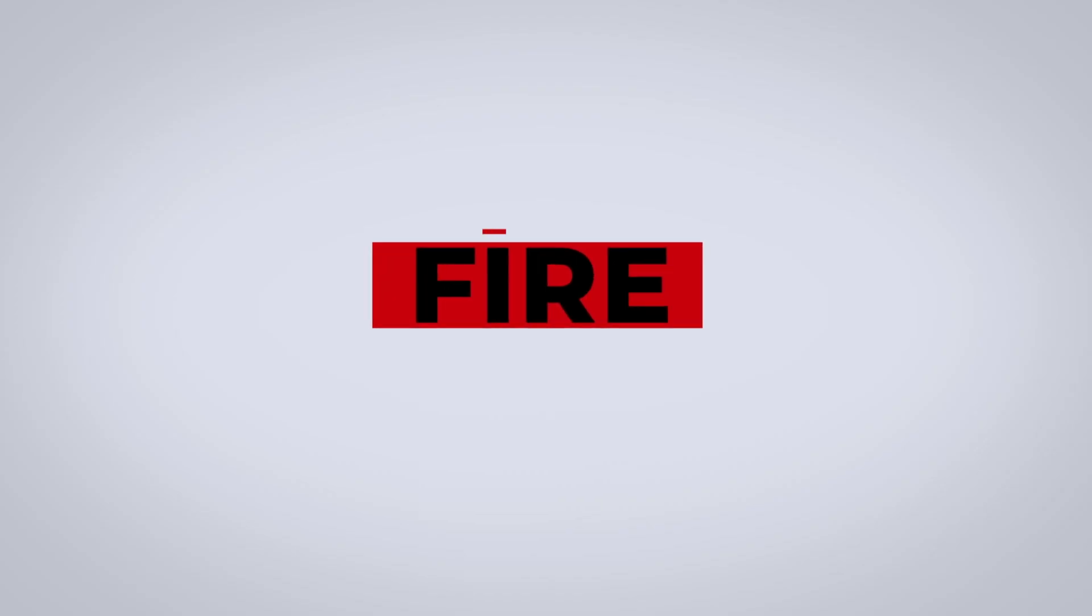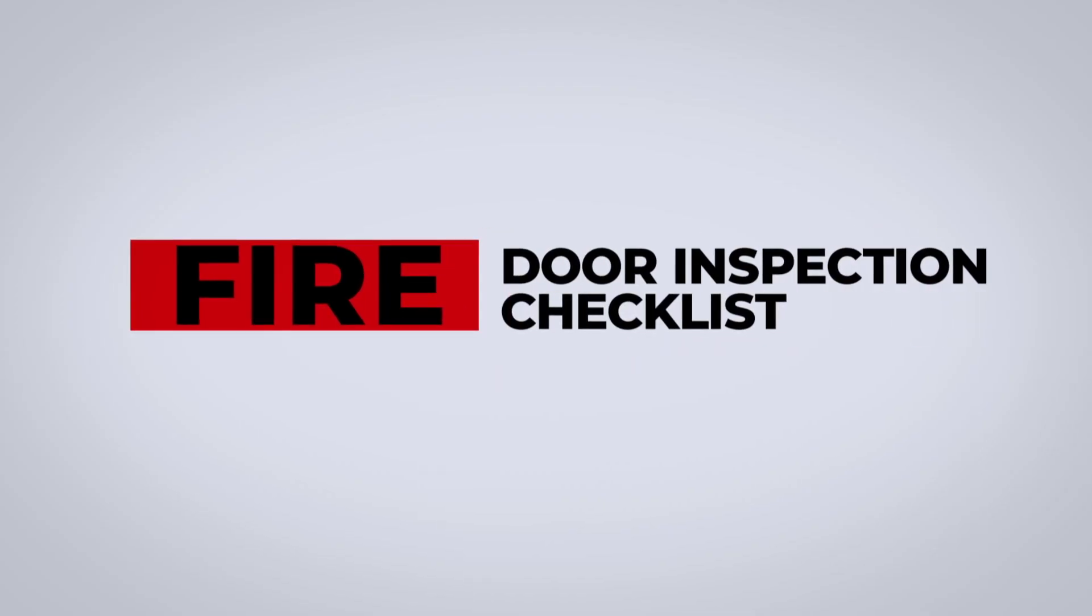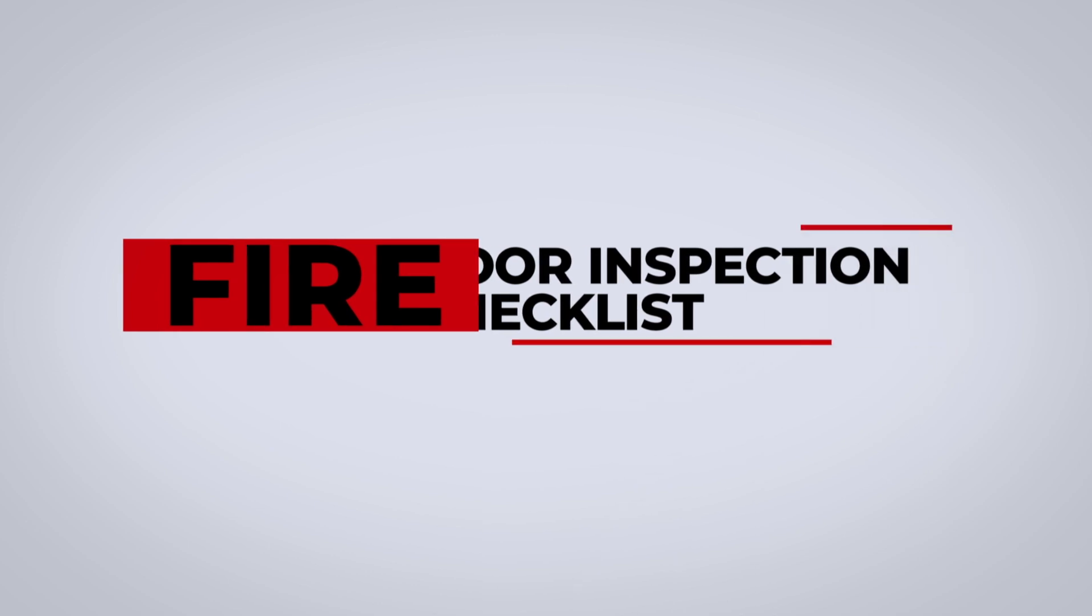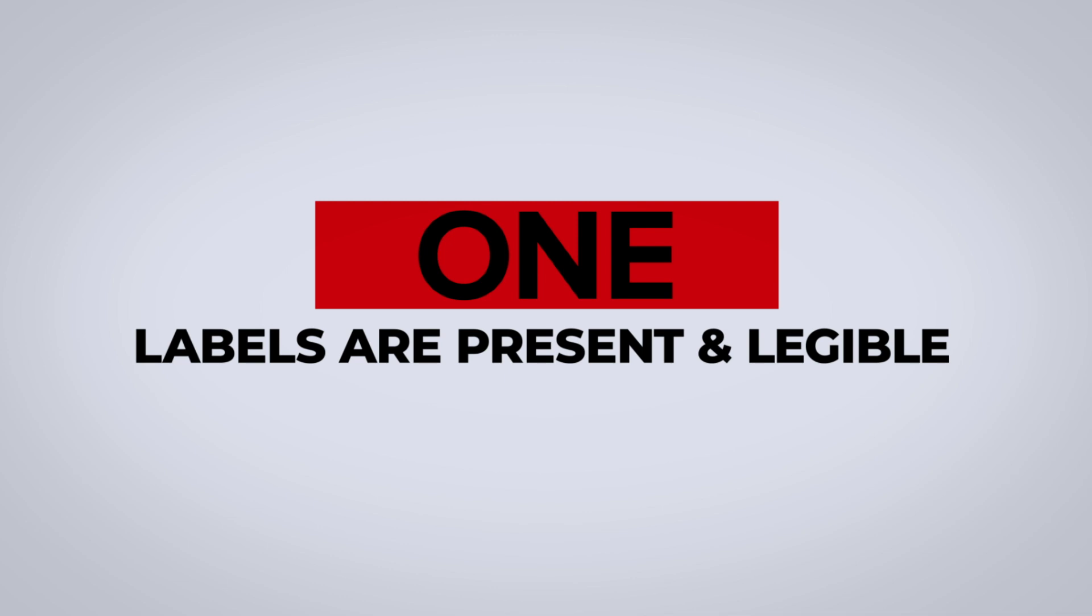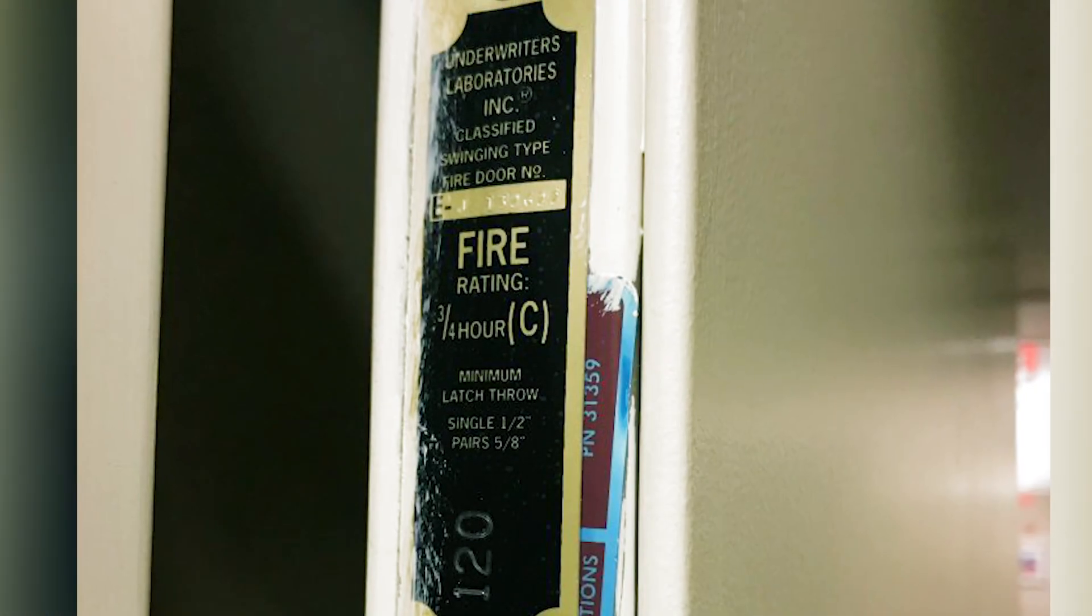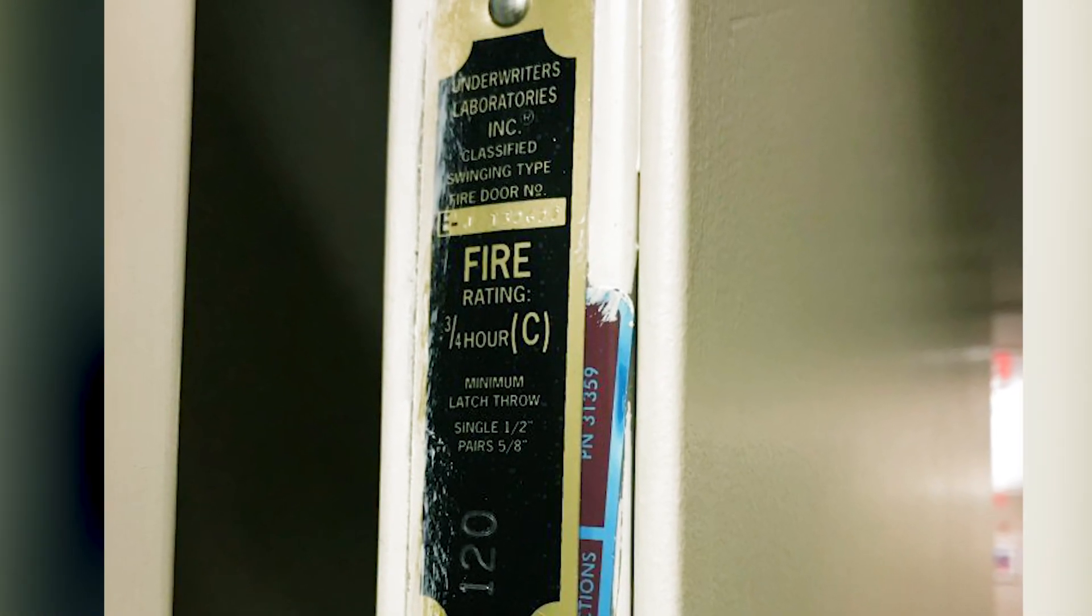Here are 13 criteria that are verified during an inspection. Number 1: Labels are present and legible. If a label is missing from a component of a fire door assembly, the component may need to be field labeled by an authorized labeling service.